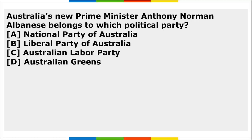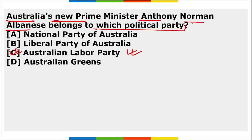Australia's new Prime Minister Anthony Norman Albanese belongs to the Australian Labour Party. After nine years in opposition, the Australian Labour Party led by Anthony Albanese has returned to power.